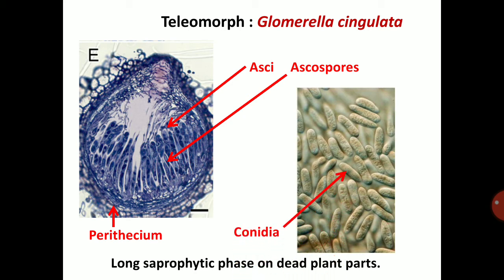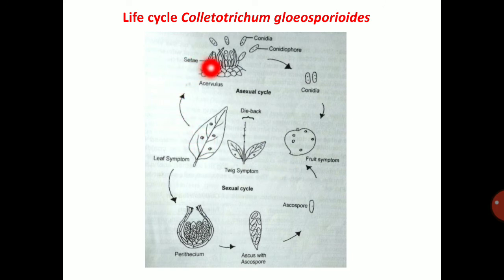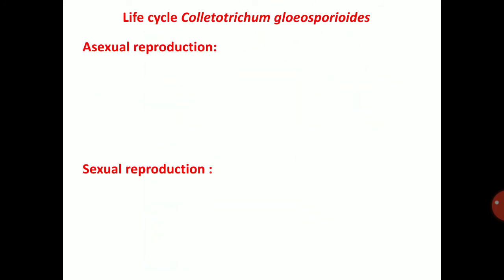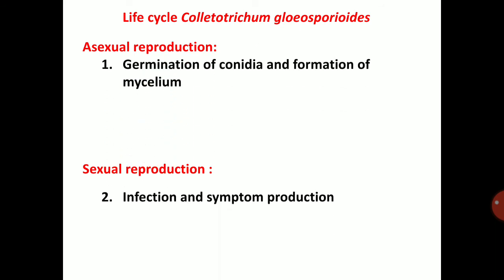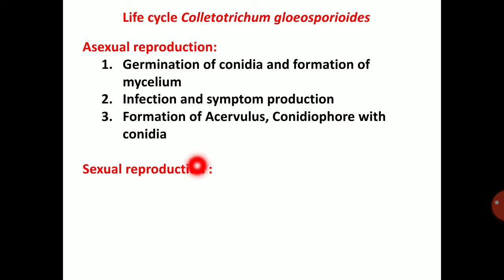This is your conidia. Life cycle of Colletotrichum gloeosporioides: Conidia infect the fruit, twigs, and leaves — all aerial parts of the plant. It produces acervuli on the infected portion. Acervuli contain setae, conidiophores, and conidia. Then conidia again germinate and produce symptoms. For asexual reproduction: germination of conidia, formation of mycelium, infection and symptom production, formation of acervulus, conidiophores bearing conidia.